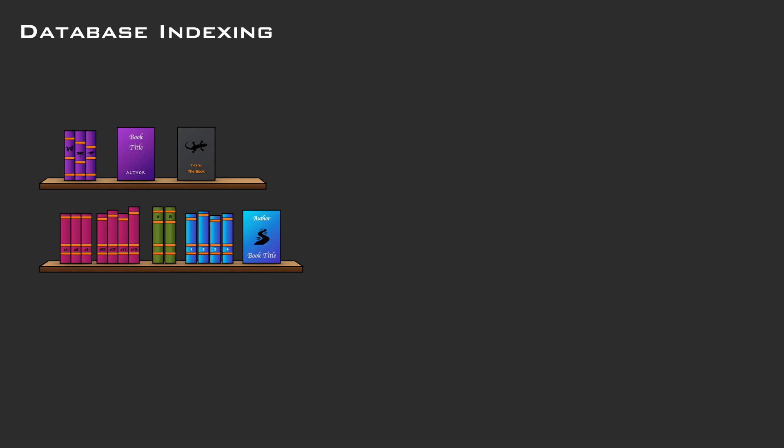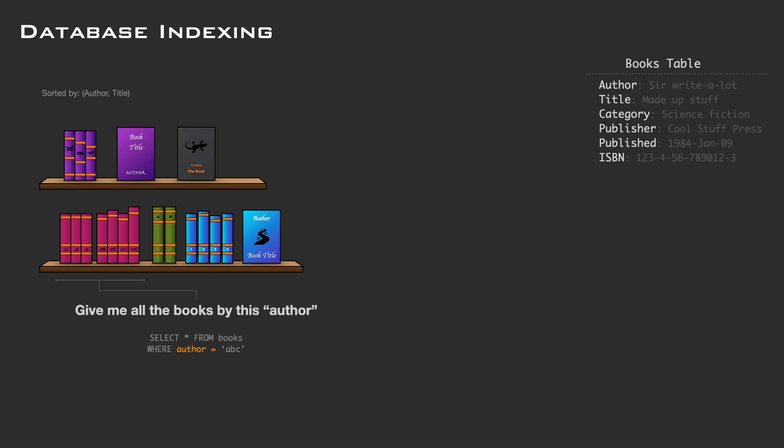For database tables you should apply the same logic. Let's say that we have a table of books. We have a few columns like author, title, category, publisher, published date, and the ISBN. If we put the books on the shelf sorting them by author and title, it's easy to understand that queries like 'give me all the books by this author' will be fast.